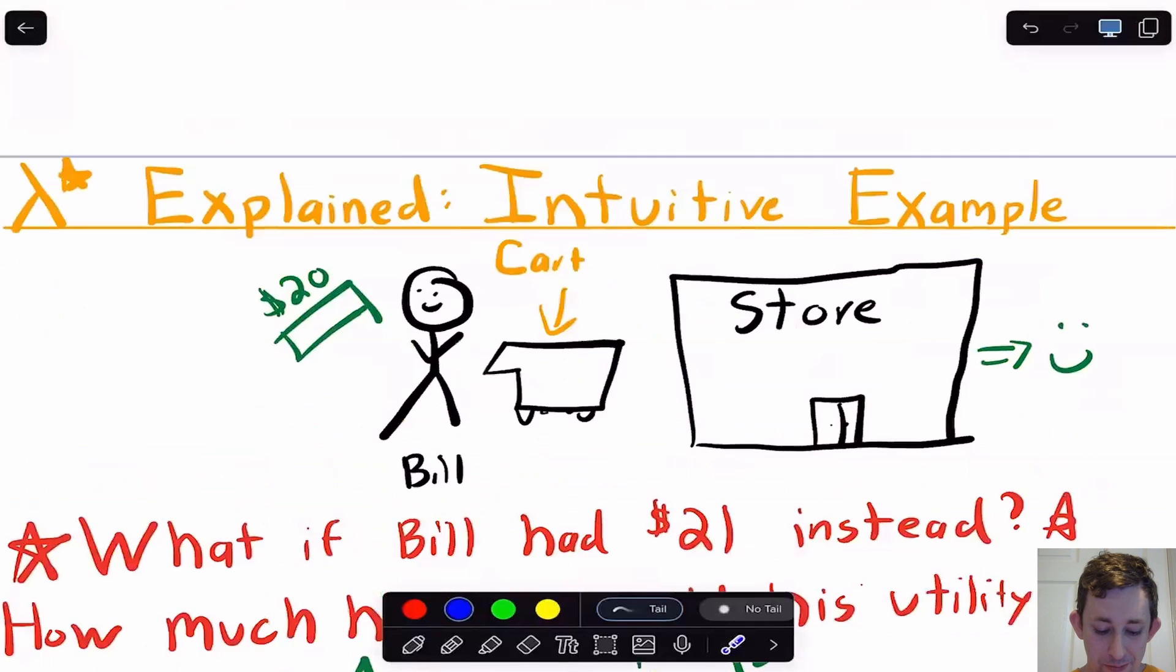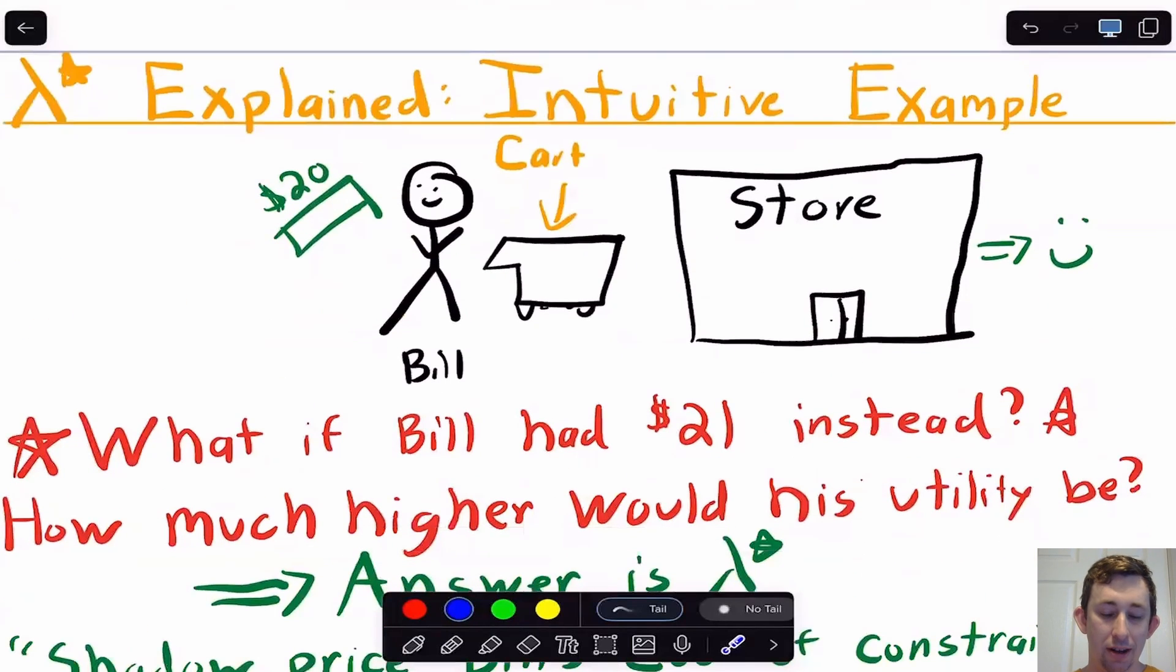The first thing that I want to do is I just want to talk intuitively about Lambda Star and why it's the shadow price of wealth, or why it's the change in the objective function when you relax the constraint a little bit. So remember the utility maximization problem, what's going on at a very basic level. We've got some person, we'll call him Bill. Bill is going to go into the store, and Bill is trying to figure out what to put in his cart when he goes to the store. Bill is trying to maximize his happiness in terms of the cart that he walks out of, but he only has a limited budget. He's only got 20 bucks.